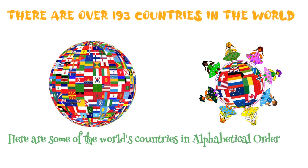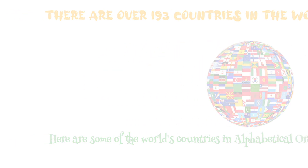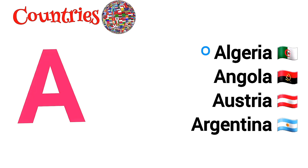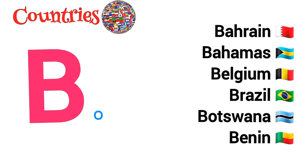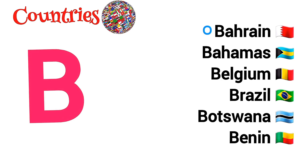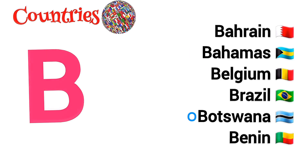The 7 continents contain over 193 countries. Here are some of the world's countries in alphabetical order. A is for Algeria, Angola, Austria, Argentina. B is for Bahrain, Bahamas, Belgium, Brazil, Botswana, Benin.